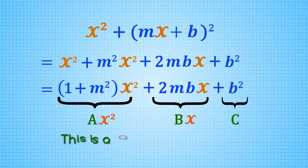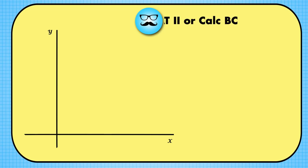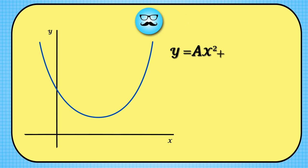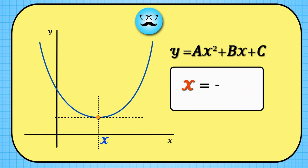But this is a quadratic equation in terms of x. And we all know from the SAT2 or Calc BC that the minimum of a quadratic y equals ax squared plus bx plus c is achieved at the vertex. Moreover, the x-coordinate of the vertex is x equals minus b over 2a.